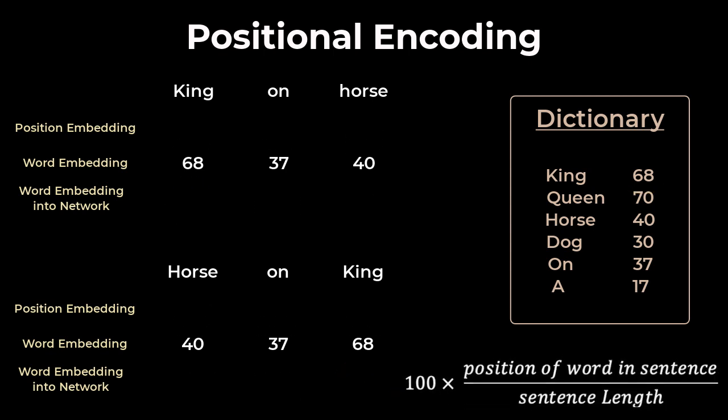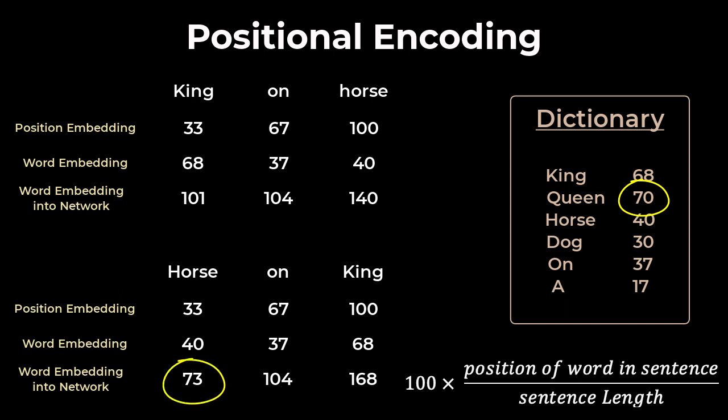But let's change the function to create our position vector. So instead of the position divided by the sentence length, let's multiply this by 100. We have our original word vectors, we now create the new position vectors based on the new formulation, and then we add these up to get the new vectors. So the word queen is now more similar to horse in the phrase horse on king. Clearly, the word vectors have lost their meaning.